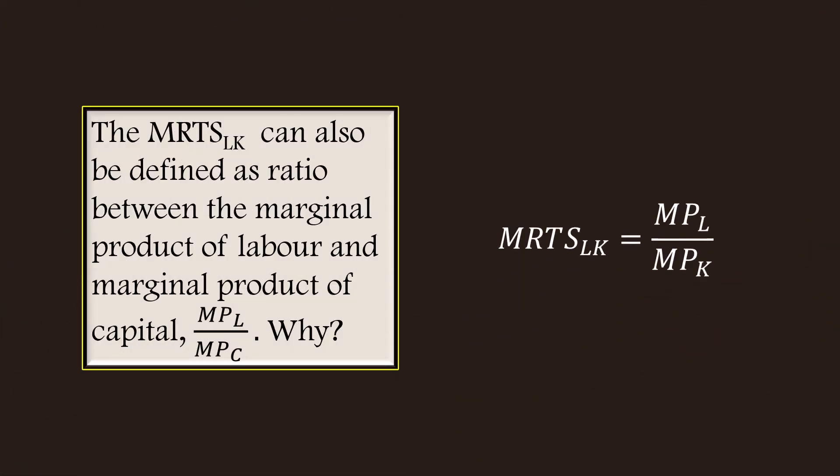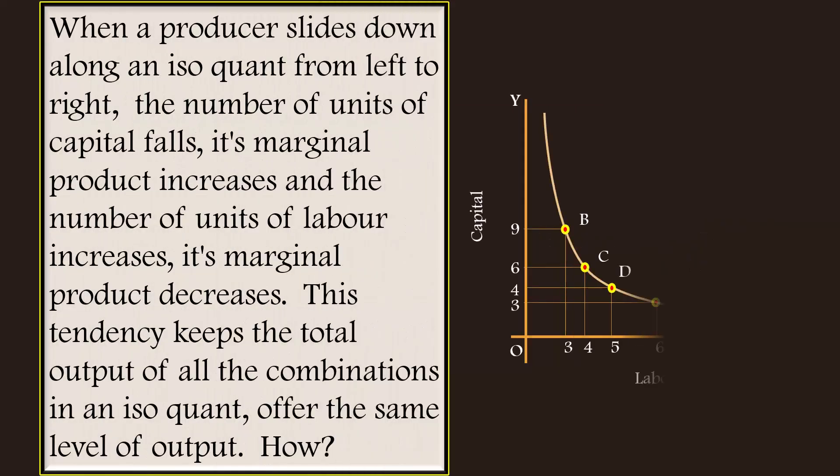Marginal rate of technical substitution of labor for capital can also be defined as the ratio between marginal product of labor and marginal product of capital. Why? When a producer slides down along an iso-quant from left to right, the number of units of capital falls, its marginal product increases, and the number of units of labor increases, its marginal product decreases. This tendency keeps the total output of all the combinations in an iso-quant at the same level. These are the two questions for which we are going to find answers.